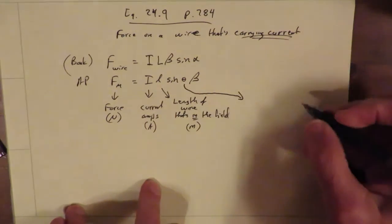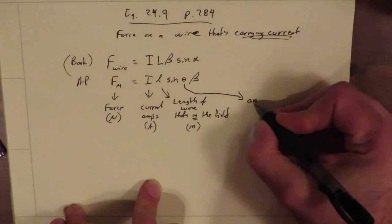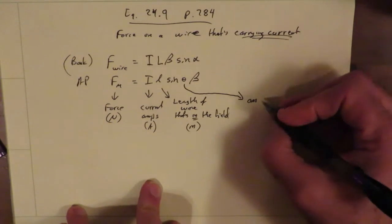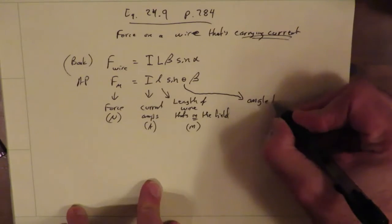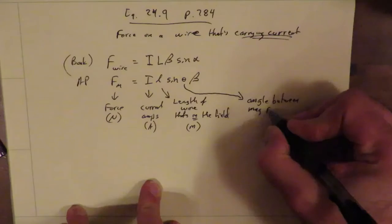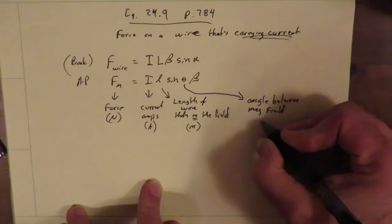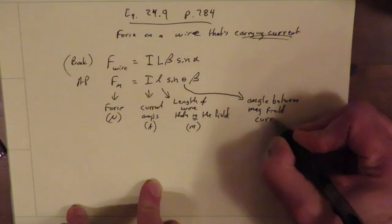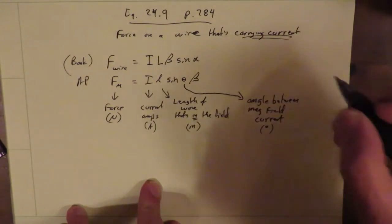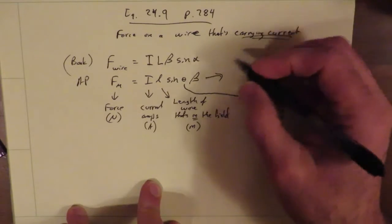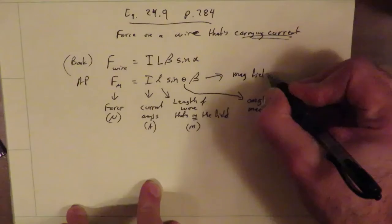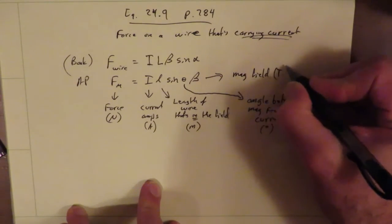Anyway, length of the wire that's in the field, and that is going to be in meters. Theta is the angle between the magnetic field and the current. Angle between the mag field and the current. And that's going to be in degrees. And then finally, beta is the magnetic field in Teslas. In Teslas.